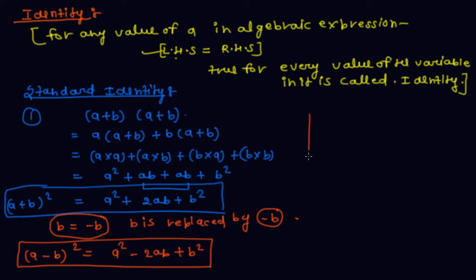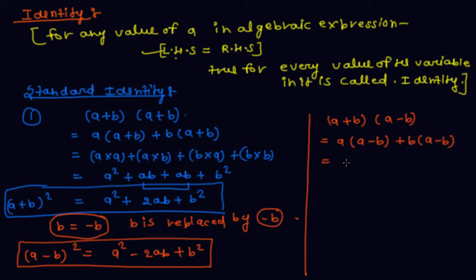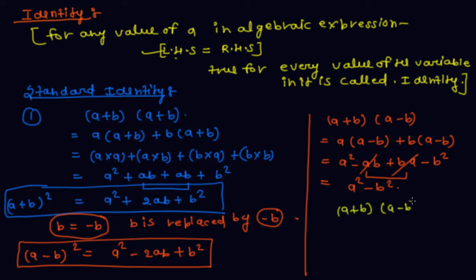Let us now discuss one more identity. If I multiply (A + B) into (A − B), then by the distributive law: A(A − B) + B(A − B) = A² − AB + BA − B². The middle terms are like terms and cancel out, giving A² − B². So the third standard identity is: (A + B)(A − B) = A² − B².